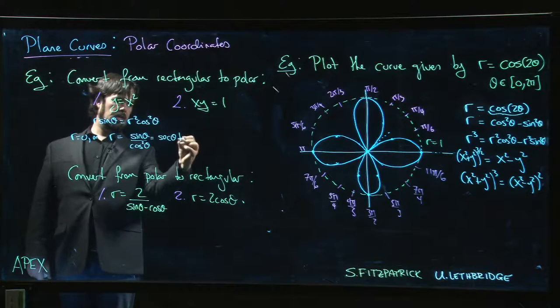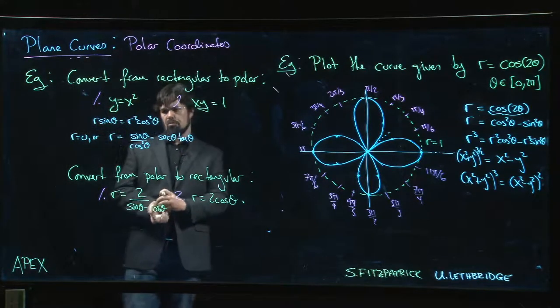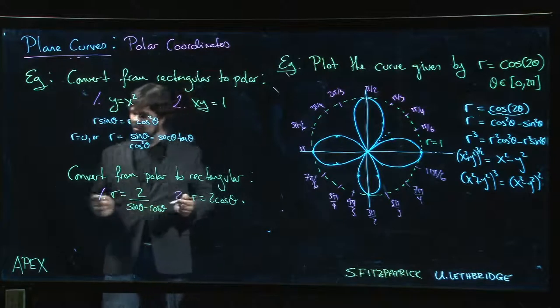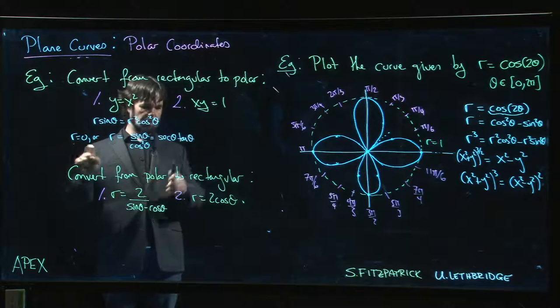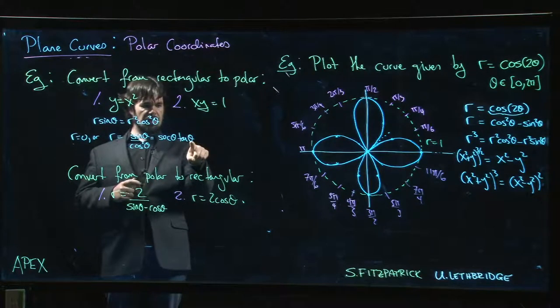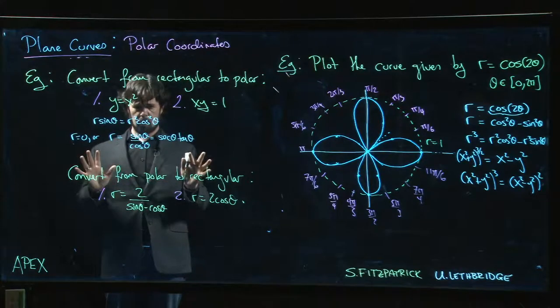We might write this as sec θ tan θ. This is sort of a common theme with these: you can discard the r equals 0 solution because it's included here. When θ equals 0, r is 0, so we don't have to worry.